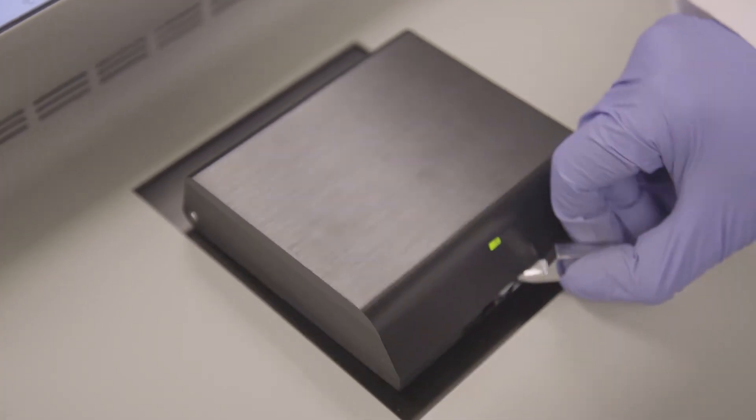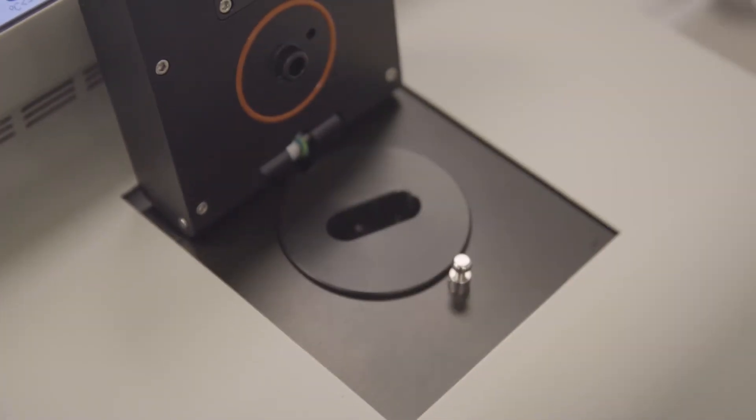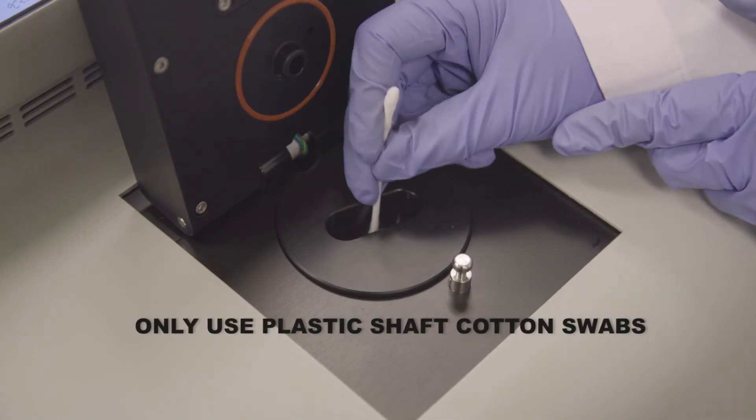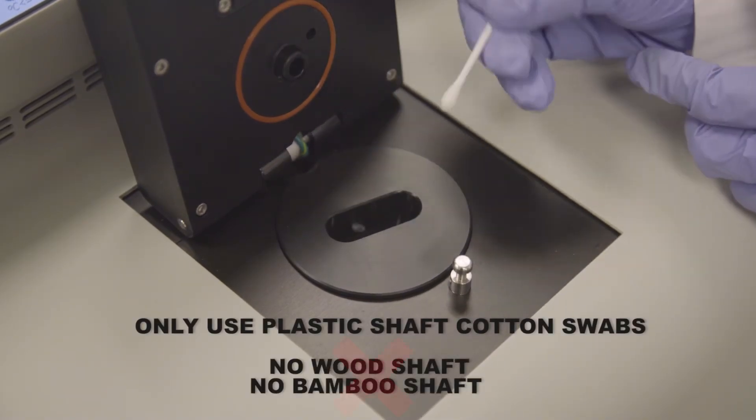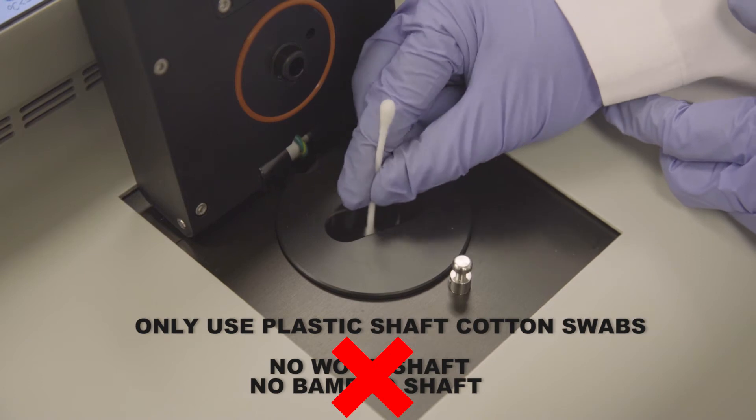To clean out distillate samples such as jet fuels or diesels from the sample cup, first remove the sample and dry the cup with a clean cotton swab. Gently swab around the inside of the cup to speed up the drying.